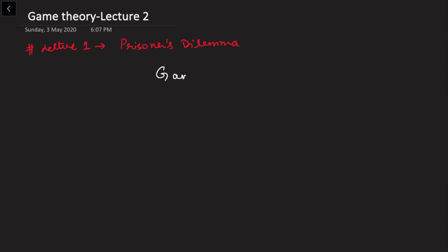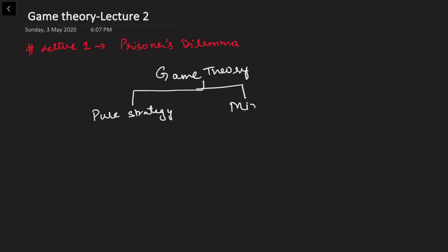Now let's see again what is game theory. Game theory is about where we have either pure strategies available with the player or the player has a mixed strategy. In the case of pure strategy, the probability of the strategy is one, because the player is always using one strategy — there is only one possibility, so this is a sure sort of strategy.